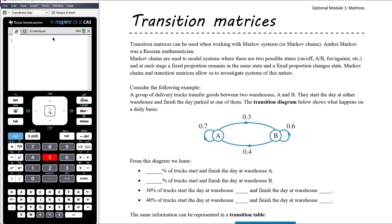Markov chains and transition matrices allow us to investigate systems of this nature. What we want to look at today is how we construct the transition matrix that describes those changes, and then in the subsequent video we'll look at how we use that transition matrix to model what's happening in the system.